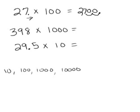Same thing for this one. Three hundred and ninety-eight times a thousand. No decimal there, but I can put one in. I'm going to move, because I'm multiplying, to the right three spaces, because there's three zeros in a thousand.